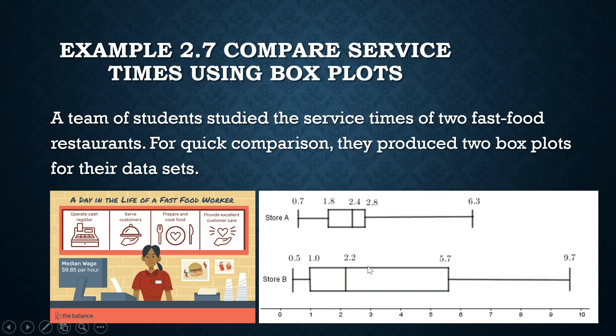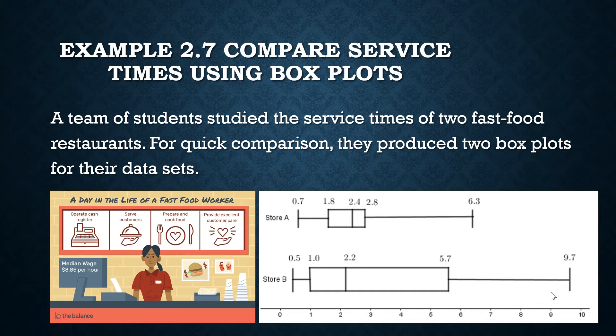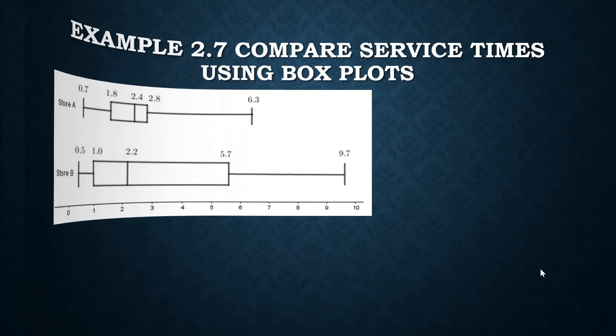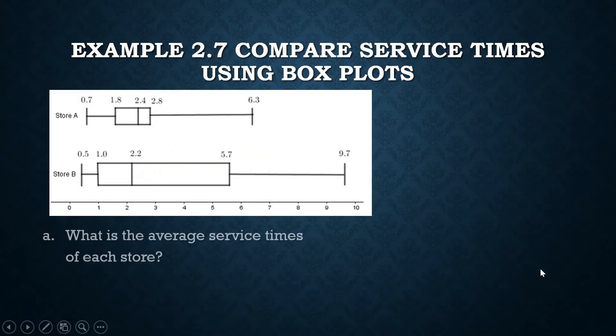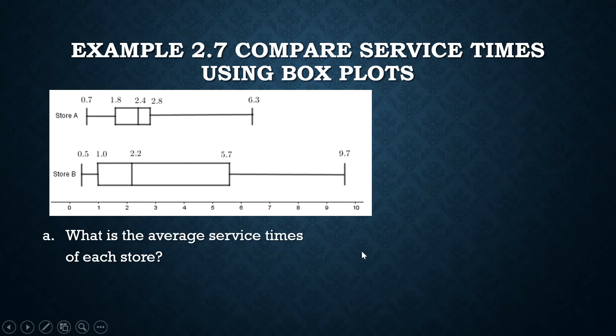How do you interpret this? The horizontal axis is the length of time. This one has a maximum service time of 6.3 minutes. Store B has a maximum service time of 9.7 minutes. That is how you interpret these figures. What are the questions? What is the average service times of each store as measured by the median? Which is more consistent with service times?